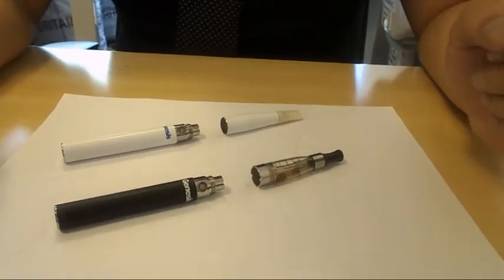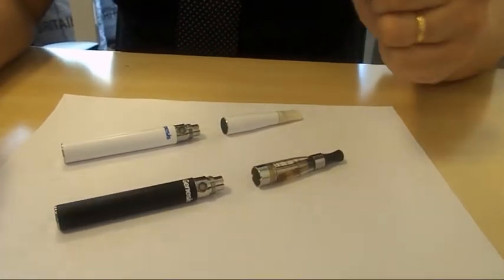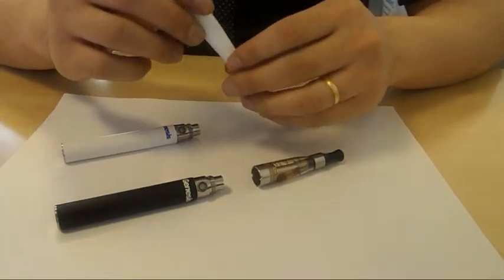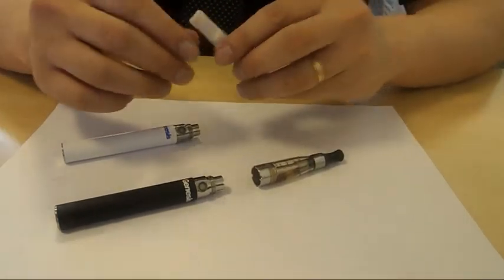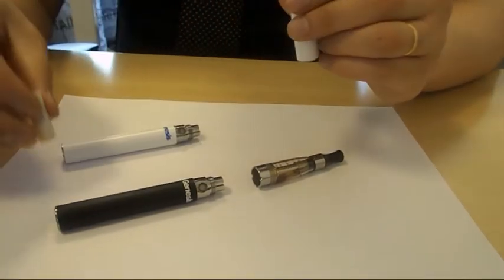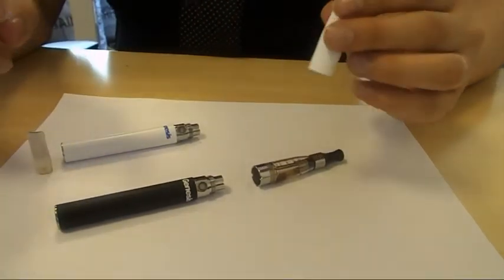Once the connection threading has been wiped, we'll do the complete clean. Let's start with the clearomizer. As always, remove the mouthpiece and battery while you're cleaning.